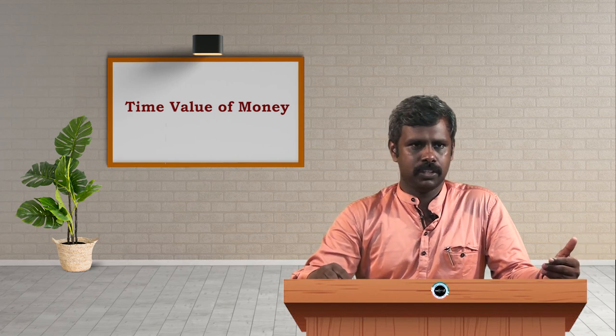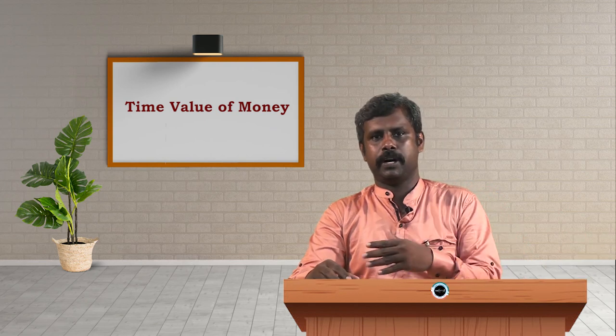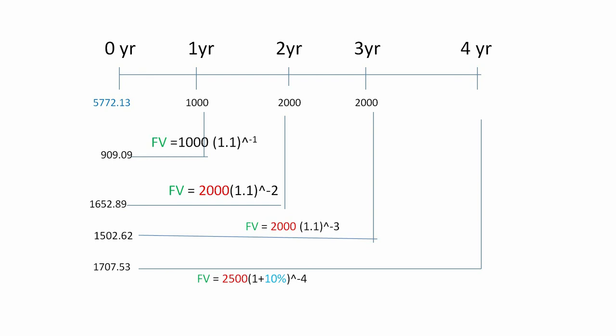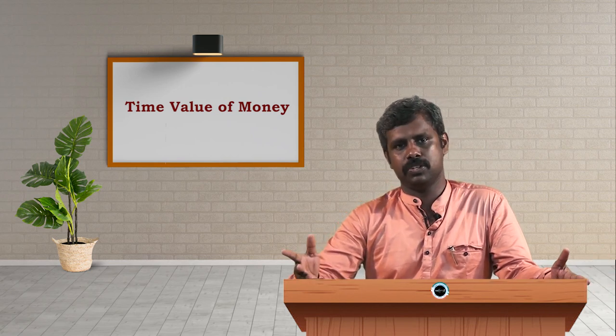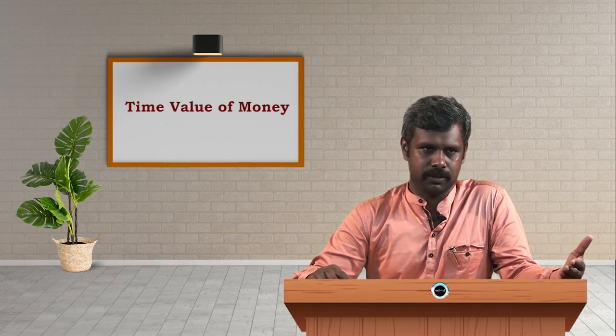This is the multiple cash flow present value case. If we are going to receive money at different points in time, what is the present value of those future cash flows? For example, receiving 1000 rupees at the end of year one, 2000 at end of year two, 2000 at end of year three, and 2500 at the end of year four — each cash flow is discounted by the number of periods until it is received. Adding all discounted values gives a total present value equal to 5772 rupees, even though the total future cash received is more than that.